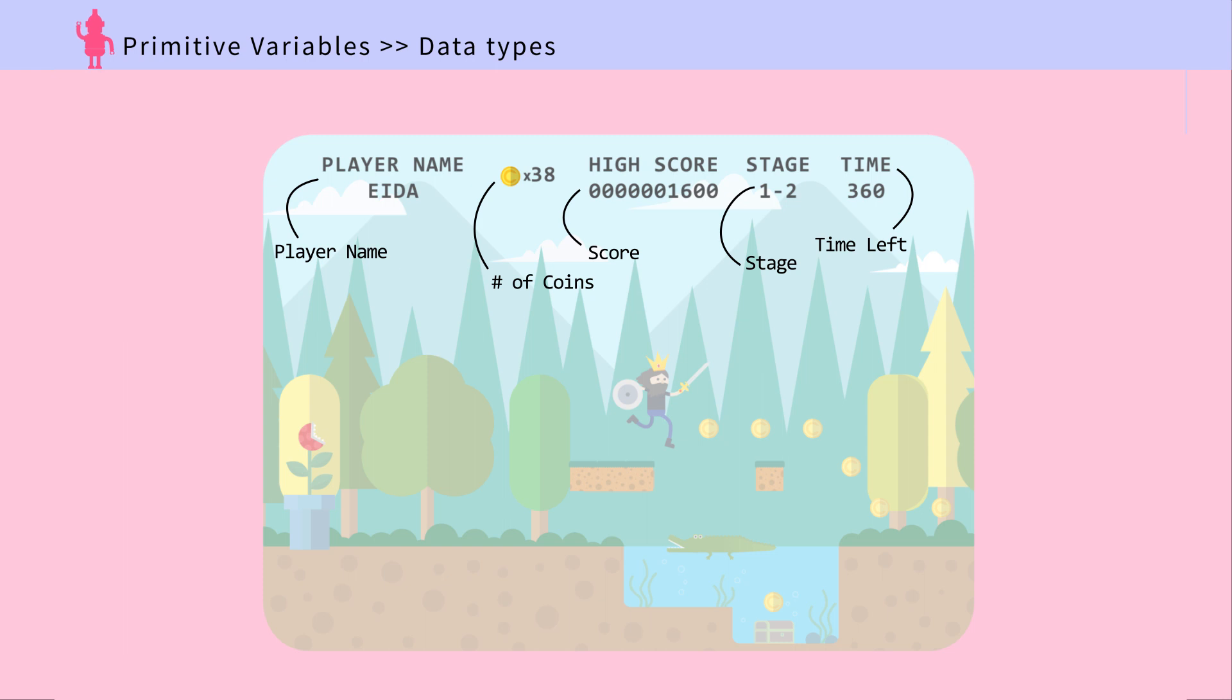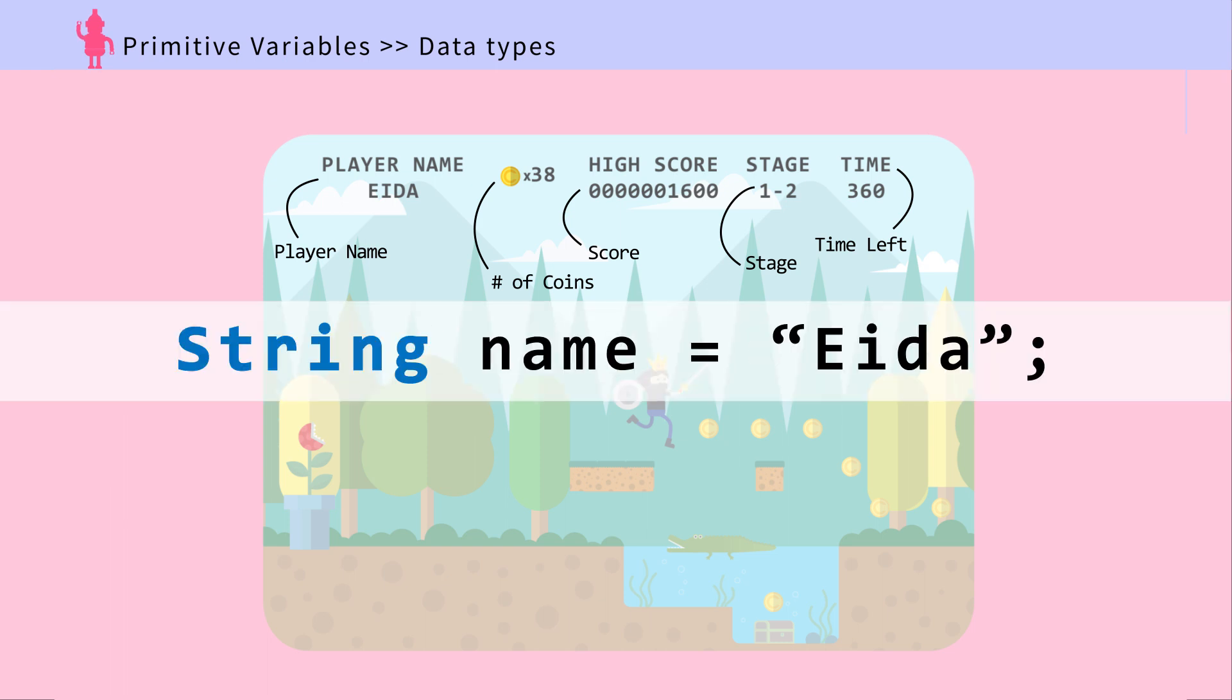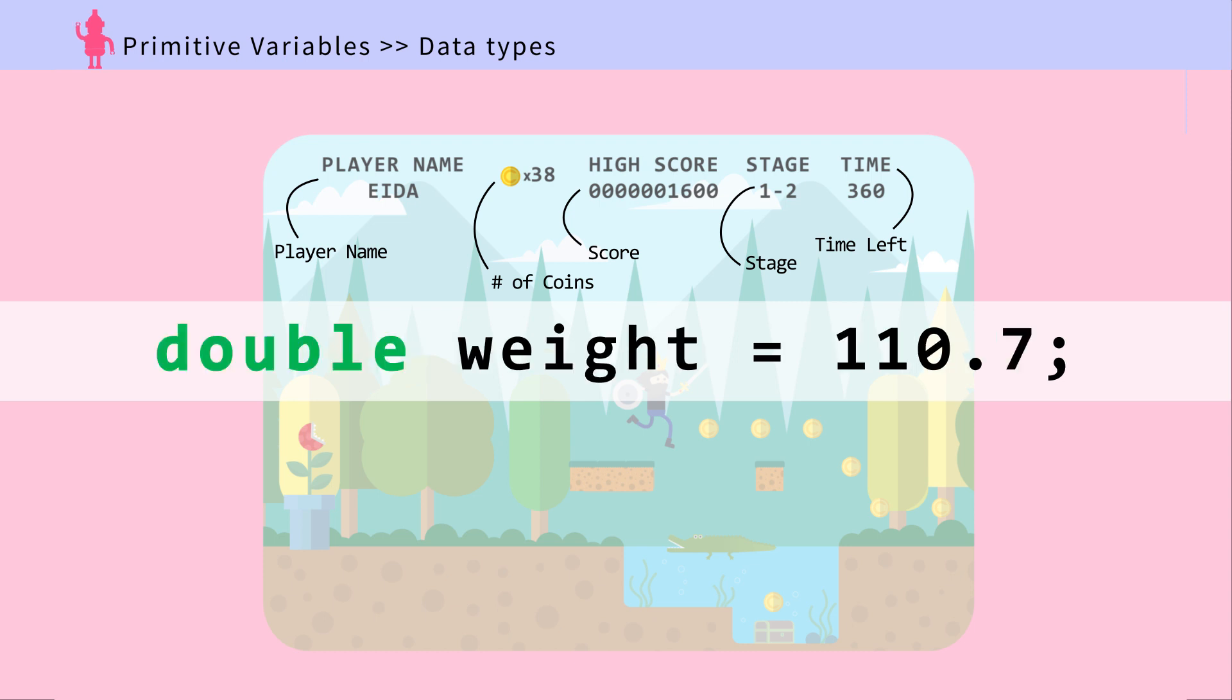Depending on the data, we'll need to use different types of variables to store it. Int for integer or whole number, string for text, double for decimals, boolean for true or false. There are more variable types, but we won't deal with them here.